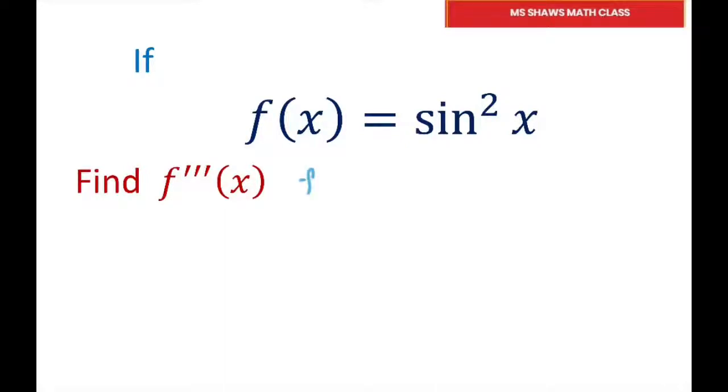So if you take the first derivative, remember you can write this as sine x squared, so use the chain rule that's going to be 2 sine of x, and then the derivative of sine of x is cosine x.